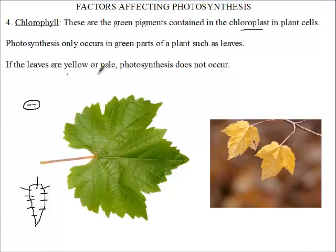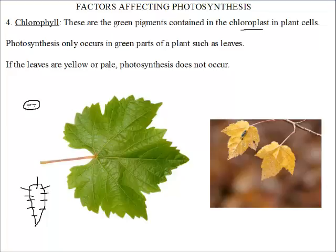If the leaves are yellow or pale, photosynthesis does not occur well. In this green leaf, photosynthesis will take place, but in these yellow leaves, photosynthesis will not take place — or there will be very little, because although they look yellow, they could have very small amounts of chlorophyll in them.